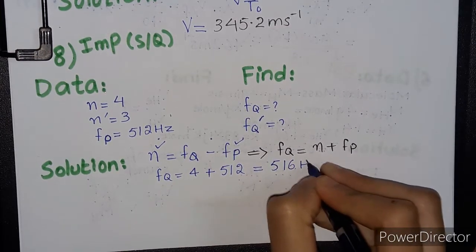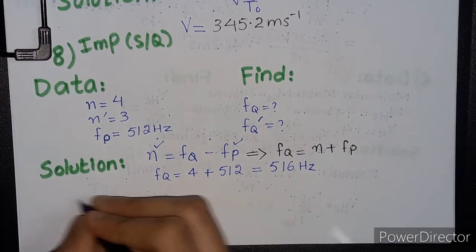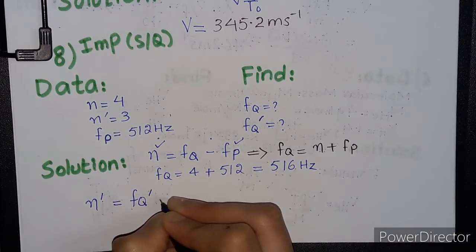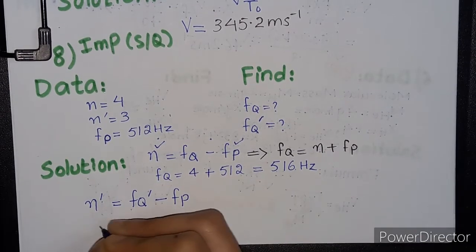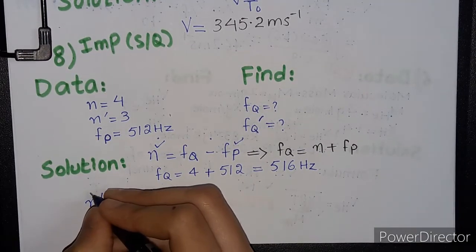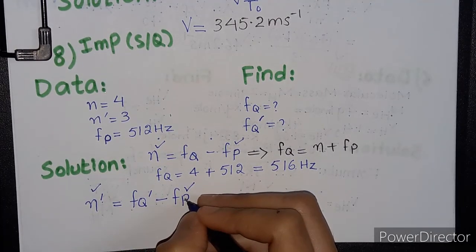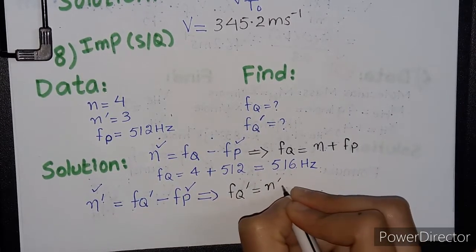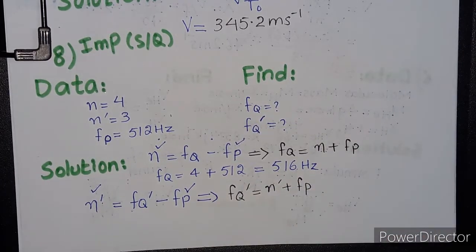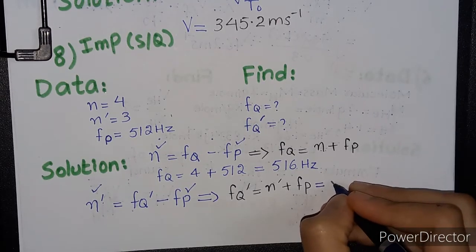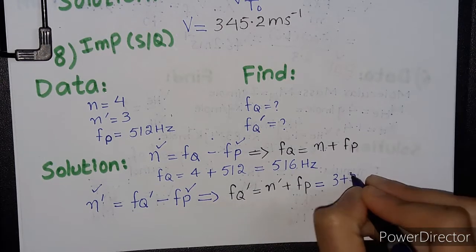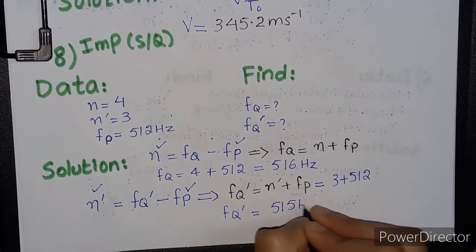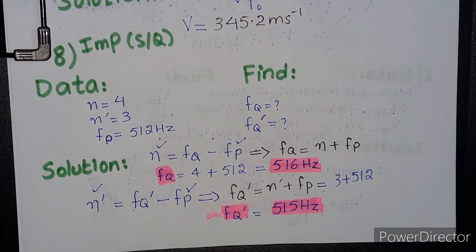Finding the new frequency after loading: n-dash equals f_Q-dash minus f_P. Rearranging gives f_Q-dash equals n-dash plus f_P equals 3 plus 512 equals 515 Hz.